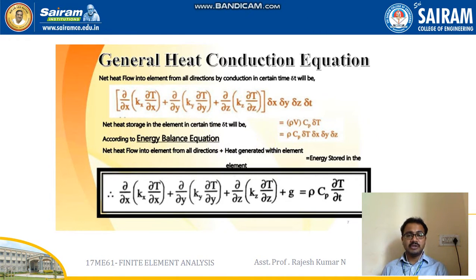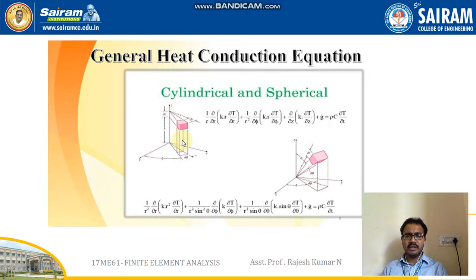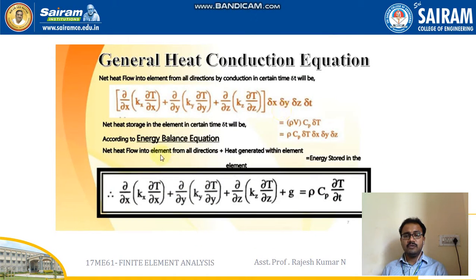According to the energy balance equation, this can be defined as: net heat flow into the element from all directions, plus heat generated within the element, which is equal to the energy stored in the element. The net heat flow is Qx, Qy, and Qz — this is nothing but the net heat flow.